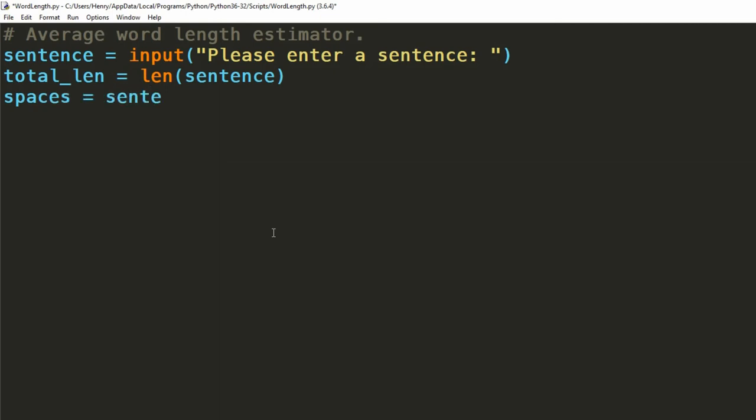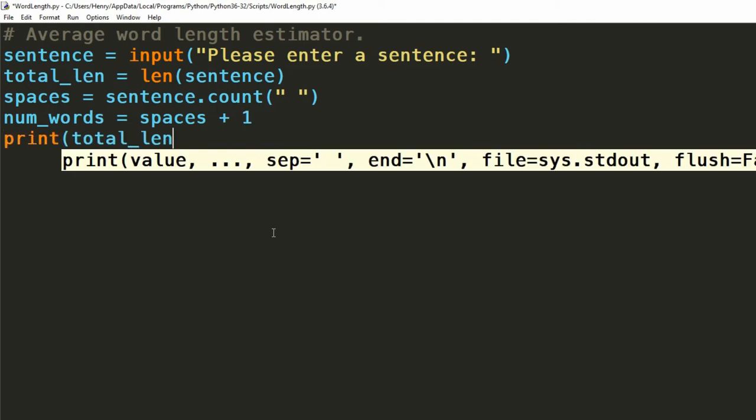Next to get the number of words in the sentence. We'll be lazy with this. We can assume that each word in the sentence will be separated by a space. What we can do with this is just count how many space characters there are. Using the count command and then add one for the final word. We can store this in another intermediate variable.